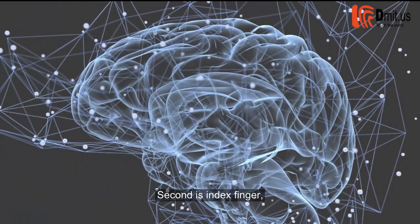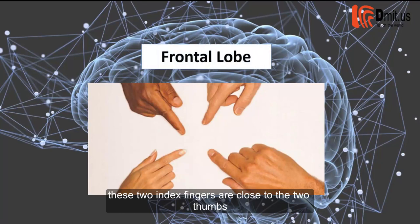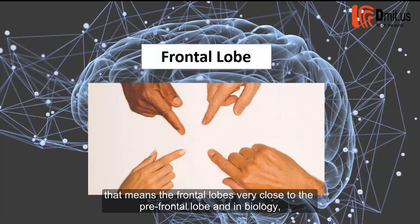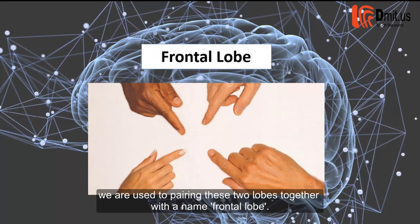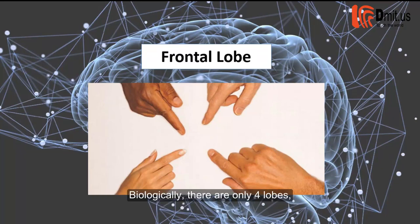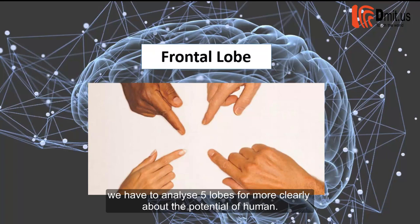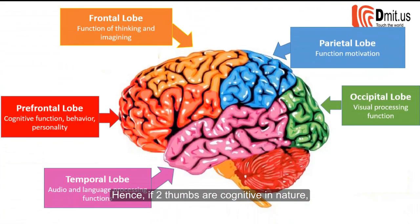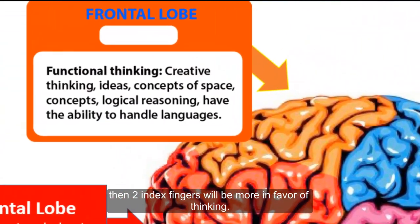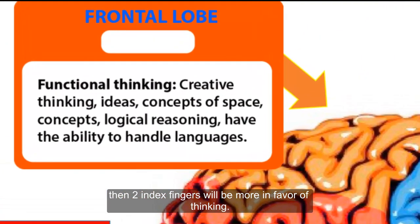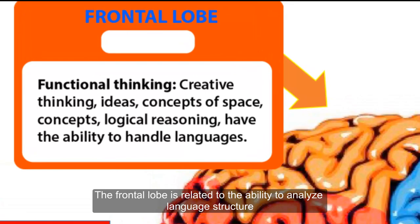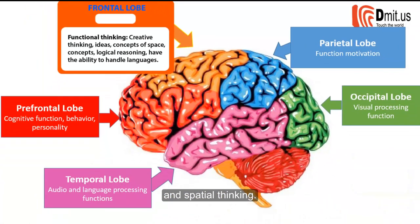Second is the index finger. These two index fingers are close to the two thumbs, meaning the frontal lobe is very close to the prefrontal lobe, and in biology we are used to pairing these two lobes together with the name frontal lobe. Biologically there are only four lobes, but when analyzing the potential, we analyze five lobes for a clearer picture of human potential. Hence, if two thumbs are cognitive in nature, then two index fingers will be more in favor of thinking. The frontal lobe is related to the ability to analyze language structure and spatial thinking.